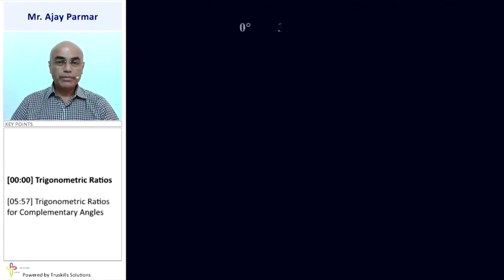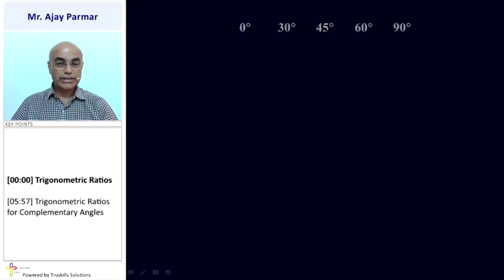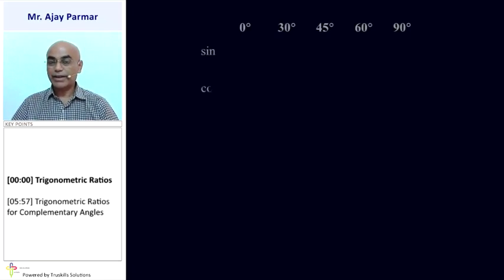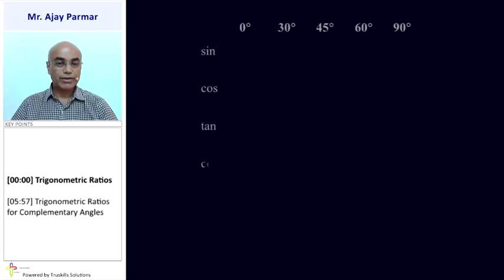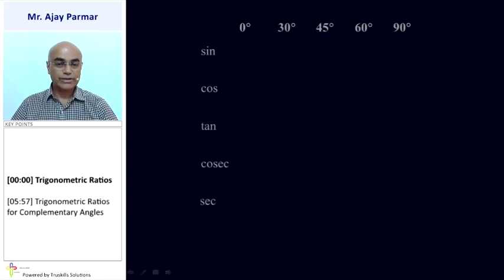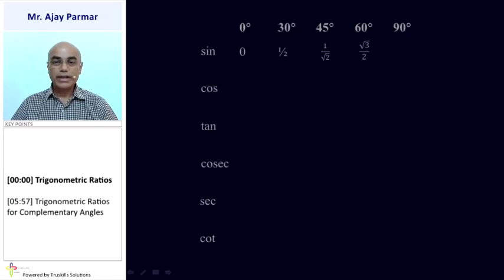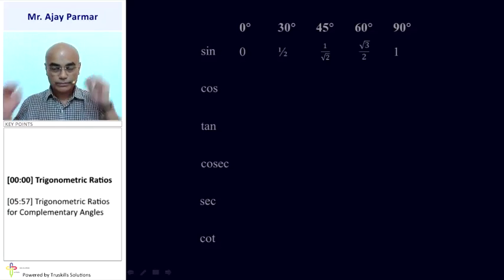We need to remember the values of all six trigonometric ratios for these five angles: 0°, 30°, 45°, 60°, and 90° for sin, cos, tan, cosec, sec, and cot. So: sin 0° = 0, sin 30° = 1/2, sin 45° = 1/√2, sin 60° = √3/2, and sin 90° = 1.